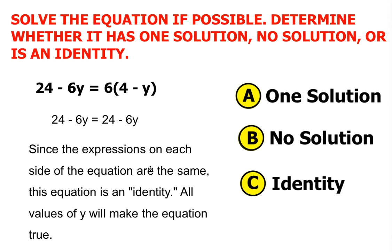So therefore, since the expressions on each side of the equation are the same, this equation is what we call an identity, which means all values of y will make the equation true.